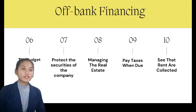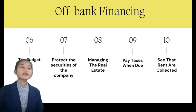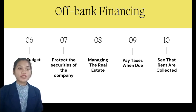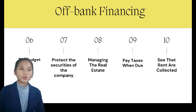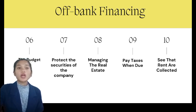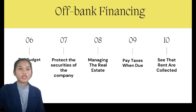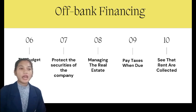The seventh is protecting the securities of the company. Bank vaults with time locks are the safest place to store all securities. Armed guards are typically stationed where entry is strictly controlled and limited. The eighth is managing the real estate of the company. The treasurer must safeguard more than just the company's cash and securities. The treasurer is responsible for ensuring that all taxes are paid on time, rent is collected from renters, repairs are made when necessary, insurance is obtained and renewed, and construction work is appropriately overseen if the company owns real estate and structures.